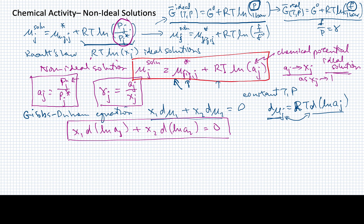We could use this to show that if one of our components has a_1 equals x_1 over the entire range from zero to one for that mole fraction, then the second component will go to its mole fraction as its mole fraction goes to one — very similar to Henry's Law. These things are reciprocal in their behavior, and this basically tells us that Raoult's Law would be obeyed by all components if it's obeyed by one component.